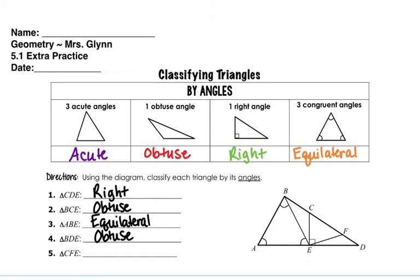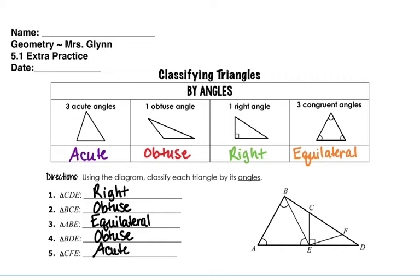And then CFE, which would be this little one over here, would be acute because it has all three acute angles.